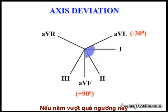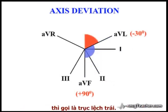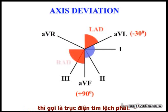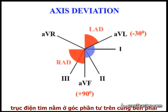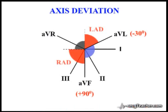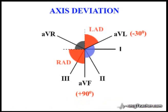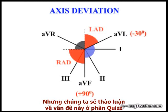Outside this normal range, if the axis lies beyond AVL, this is termed left axis deviation. If the axis lies beyond AVF, this is termed right axis deviation. Axis deviation into the fourth quadrant, or no man's land as it is sometimes referred to, is observed in certain situations, but we will leave discussion of this to the quiz section.